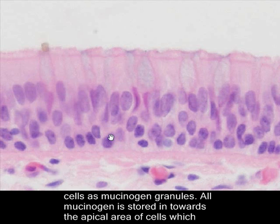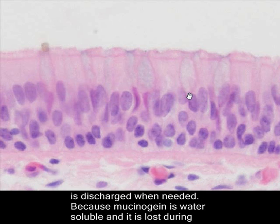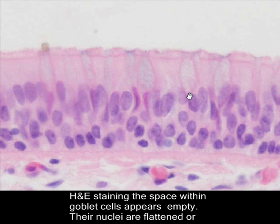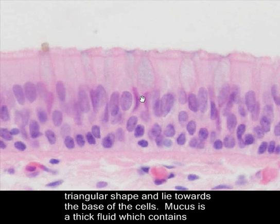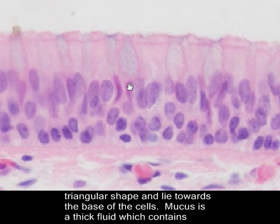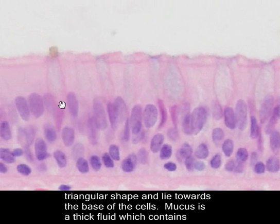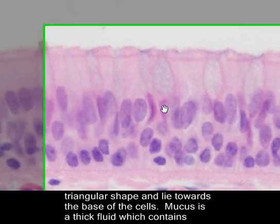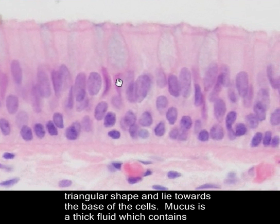All mucinogen is stored towards the apical area of cells and is discharged when needed. Because mucinogen is water-soluble, it is lost during H&E staining, so the space within goblet cells appears empty. Their nuclei are flattened or triangular in shape — this is a nucleus of a goblet cell here, and this is another one — triangular and flattened in shape.